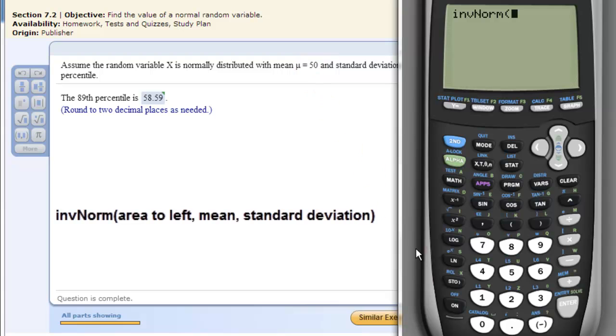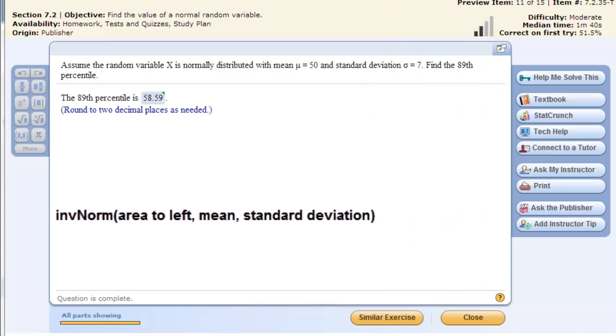The function also takes in the mean and standard deviation. So we type in 0.89, comma, the mean is 50, comma, and the standard deviation is 7.